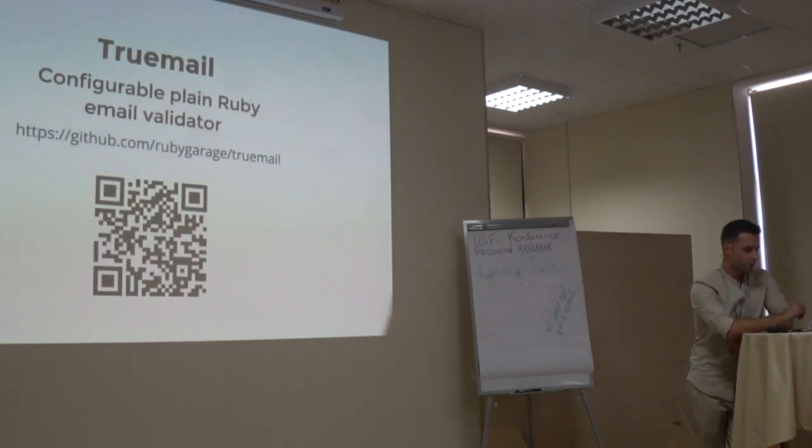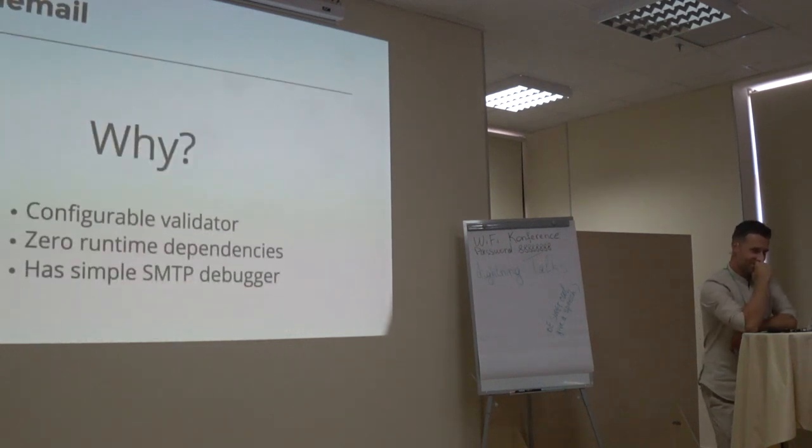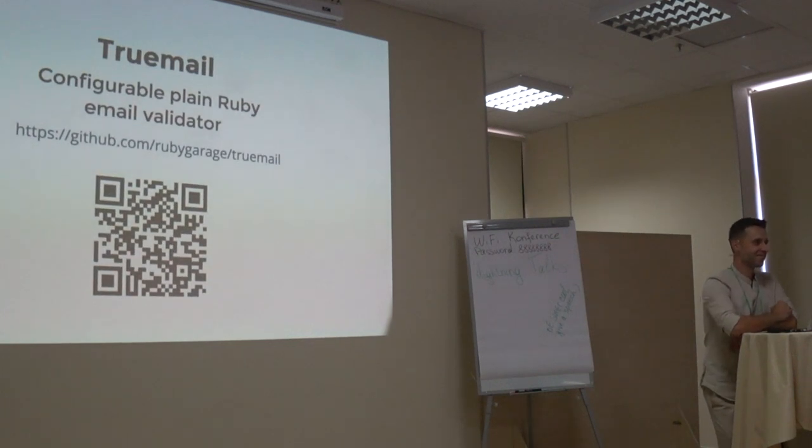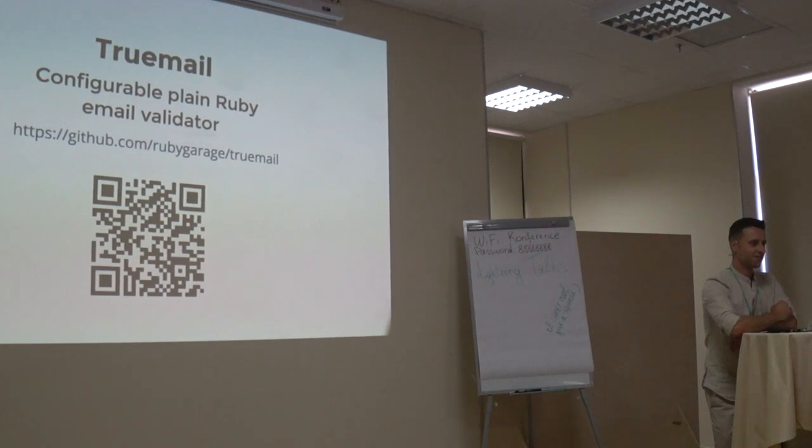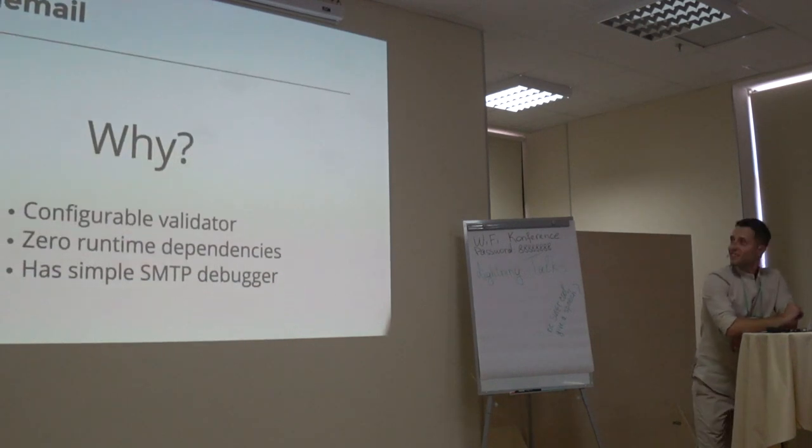I tried to implement into Truemail gem everything you have seen before. It is lightweight configurable plain Ruby email validator. Here is the link on GitHub and QR code if you want to. You can comment, share it. Truemail gem helps you to validate emails via regex pattern by domain DNS records and the real existence of account on a mailbox provider. But why Truemail?